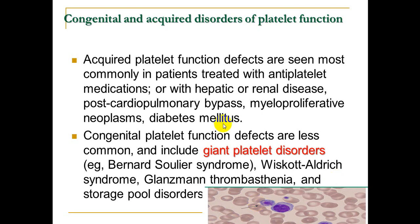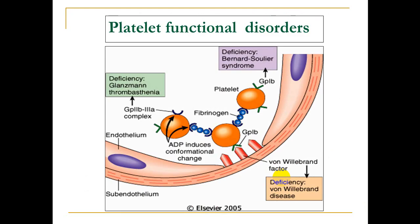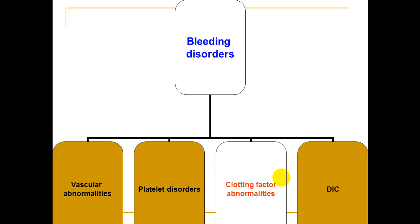Regarding congenital platelet disorders, we have giant platelet disorders where the platelet count is normal but platelet function is abnormal. The most common causes are Bernard-Soulier syndrome and Glanzmann thrombasthenia. Treatment usually involves platelet transfusion; if not responding, activated factor seven or bone marrow transplantation can be used.